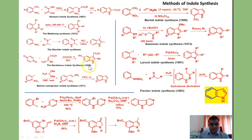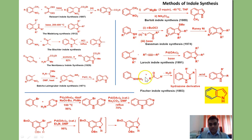Nenitzescu synthesis is particularly useful for the synthesis of 5-hydroxy indole, which is very abundant in natural products. It involves a condensation of benzoquinone with an enamine to form 5-hydroxy indole. These five methodologies were discussed in the previous class. In this particular lecture we are going to discuss Bartoli indole synthesis, Gassman indole synthesis, and Larock indole synthesis.